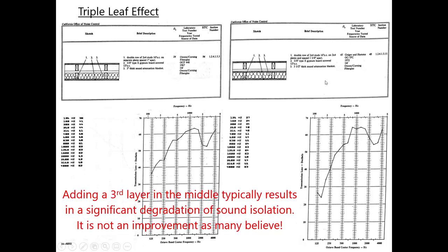This is a fairly common real-world scenario: a partition like this gets designed, then the structural engineer comes along and says you need sheathing in there for structure. Conversations come up about constructability, and it gets decided to put the structural sheathing in there. This will happen all the time, and as we just demonstrated it causes a huge reduction in transmission loss — taking you from something that easily satisfies code to something that's not even close.